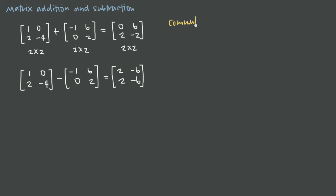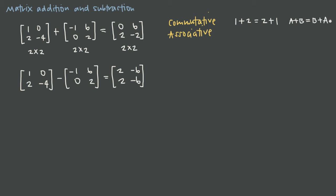When we're adding matrices, matrix addition is both commutative and associative. The commutative property tells us that with real numbers, 1 plus 2 is the same thing as 2 plus 1 — you can change their order and still get the same result. Commutative comes from commute, meaning to move. Well, matrix addition is the same way: if I have matrices A and B, A plus B will equal B plus A. So I can add the matrices in the opposite order and still get the same result.